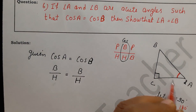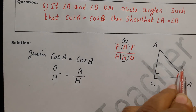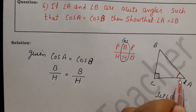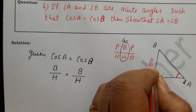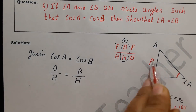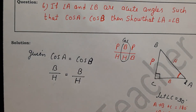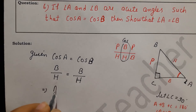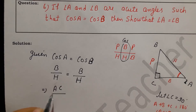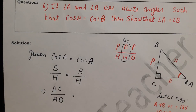For an acute angle, the sides are: hypotenuse, base, and perpendicular. We are talking about acute angle A. For this angle, one side is perpendicular, one is the base, and one is the hypotenuse. So cos A equals base over hypotenuse, which is AC over AB.